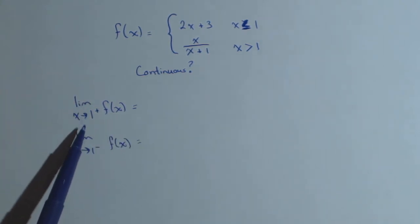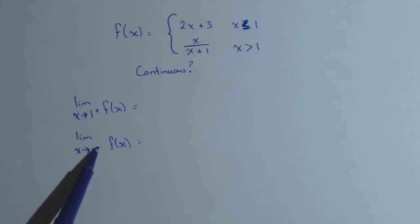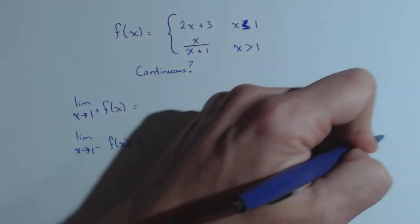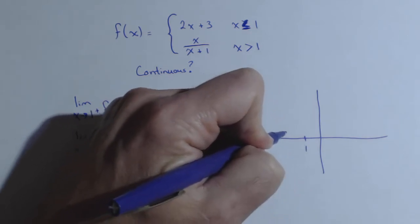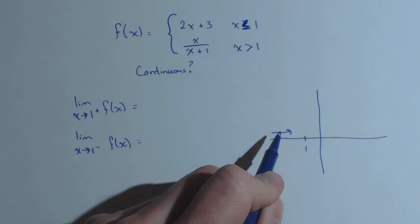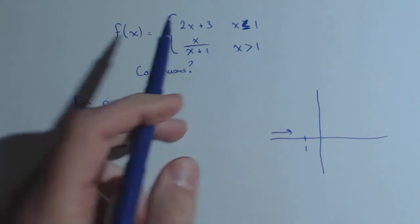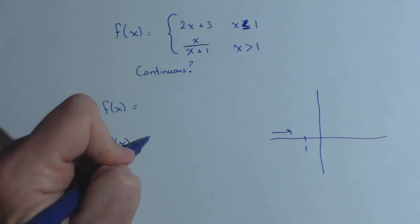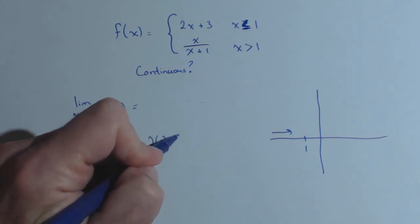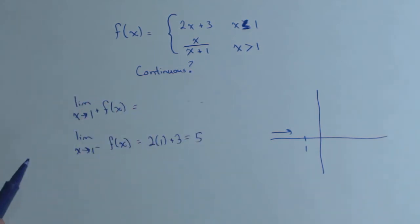That's gonna be determined by what piece we're on. If x is going to 1 from the left, that means the x values are less than 1 and heading towards 1. If we think graphically, here's where x equals 1—as we're coming in from the left, we use x values less than 1, which means we use this part of the graph. That can be done via direct substitution: 2 times 1 plus 3, or 5.